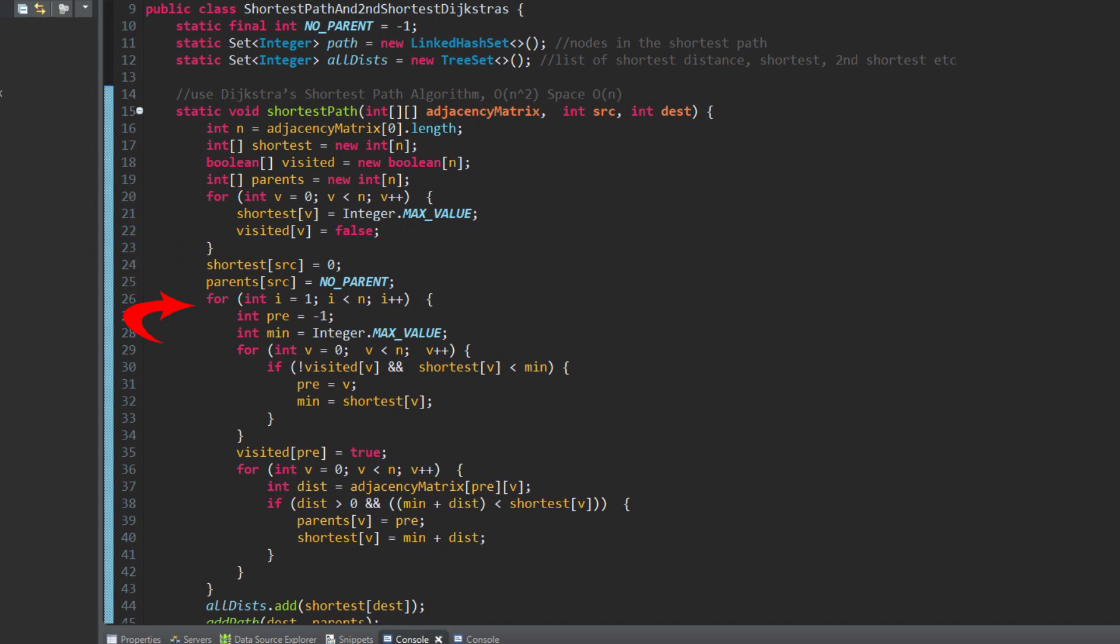After initialization, we will go through each vertex and find the smallest distance. Save the vertex associated with it. We are going to use this vertex as source vertex to calculate the distance to other vertices. If the total distance is smaller than what's stored in the shortest array, we update the values in the shortest and the parents.